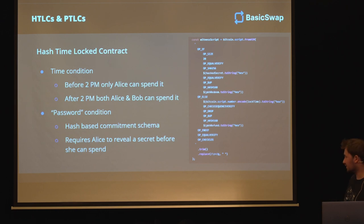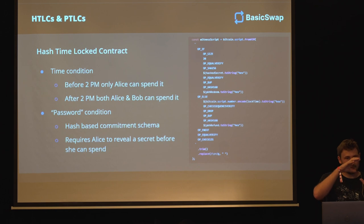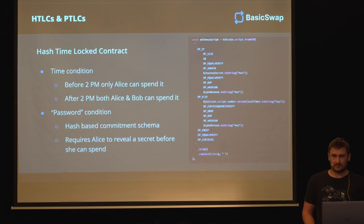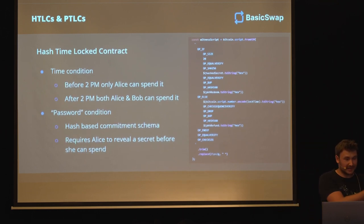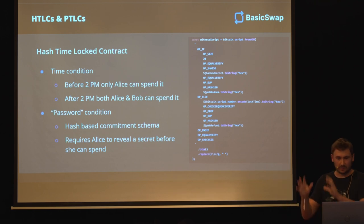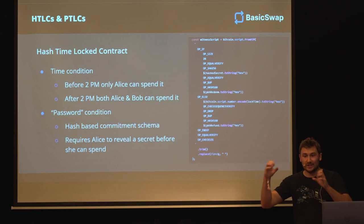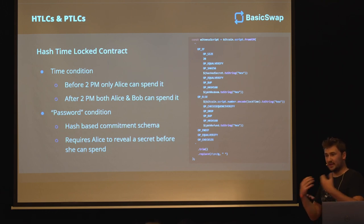Hashing is a technique where we take a piece of text - let's say the secret - and we do a mathematical transformation that turns it into some garbled piece of text. And it's a one-way street. If I give this garbled text to you, you wouldn't know what created this garbled text. Only if you have the secret and the original value can you easily generate the garbled text. We'll call it a hash. And that's how we basically build a hash-based commitment schema. In the contract, we will put a condition that says you need to reveal the secret for this hash, for this garbled text. And that's how we can make someone commit to revealing a secret.